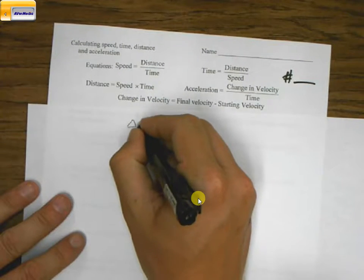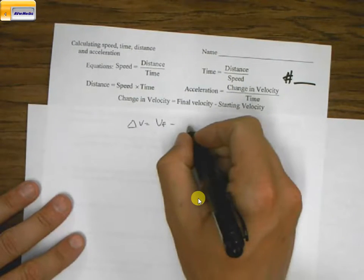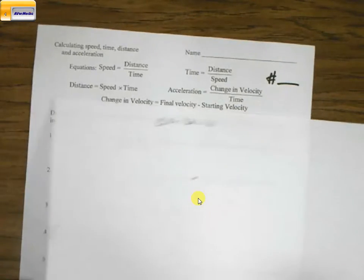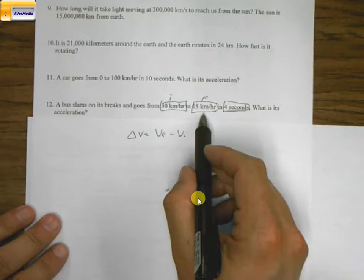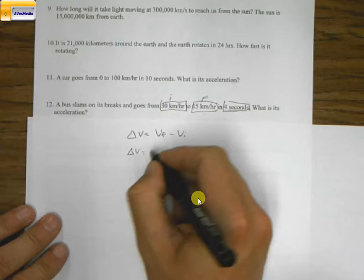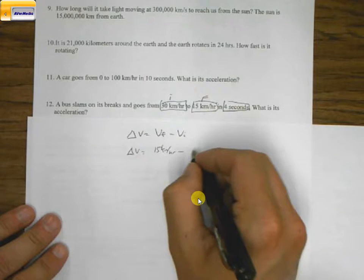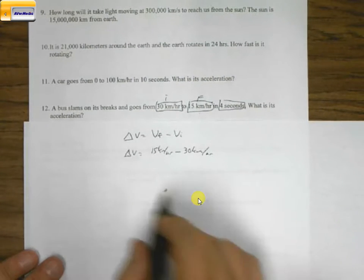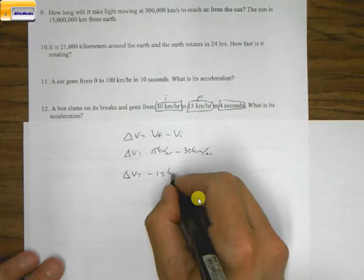I want to know the change in velocity, which is equal to V final velocity minus V initial, or starting velocity. So if we go back to this particular problem, their final velocity is going to be 15 kilometers per hour. So I substitute: change in velocity is equal to V final, which is 15 kilometers per hour, minus 30 kilometers per hour. So that's a difference of negative 15 kilometers per hour.